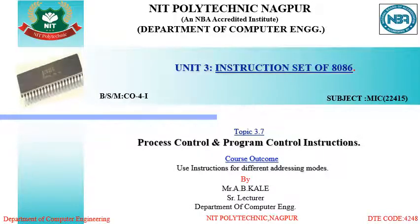Hello students, welcome to this video series on the subject Microprocessor. We are in the third unit, i.e., the instruction set of 8086. Today's topic is to study different process control and program control instructions in 8086. The course outcome of this unit is to use instructions for different addressing modes. Process control instructions are used to control the different processes going inside the microprocessor. Program control instructions are also called flag instructions.